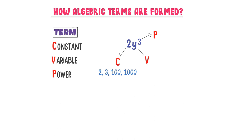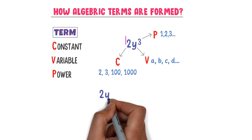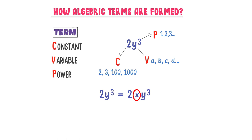The variable part of the term is made up of English alphabets like A, B, C, D, etc. And the power part of the term is again made up of numbers like 1, 2, 3, etc. Note that 2Y cubed means 2 multiplied by Y cubed, but we eliminate the multiplication sign and just write 2Y cubed. Thus, algebraic terms are made up of constant part, variable part, and power part.